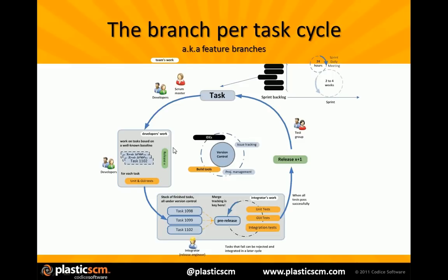When a developer is ready, he will typically run all the tests on each task — whether unit tests, GUI tests, smoke tests, or whatever. At a certain point, you will have a stack of finished tasks. These are taken by an integrator — normally a release engineer or a developer responsible for that role — who merges all the branches the team created, gets them all tested, and creates a new release, which becomes the base for the next cycle. And then the cycle goes on and on.